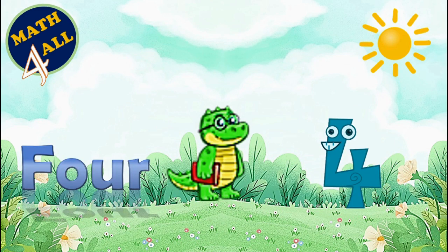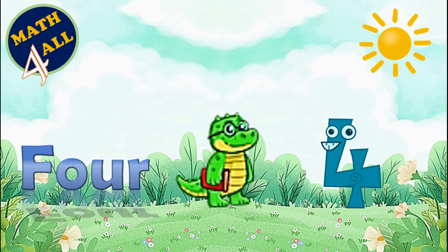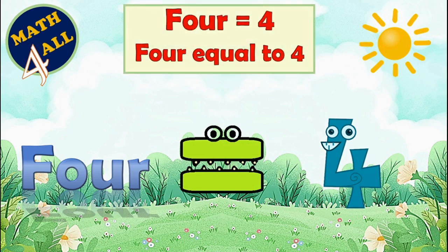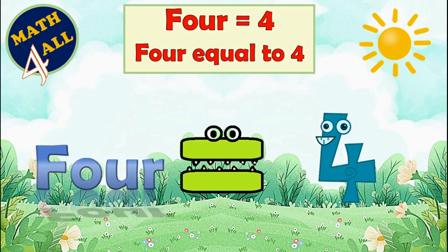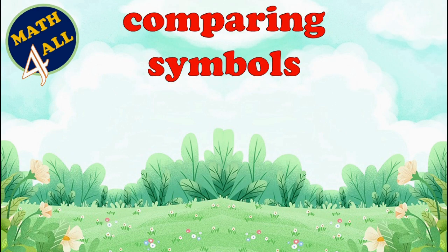Again we have two new numbers. If we are going to read them, we have 4 and 4. Something confused Number Gator — now we have two numbers that are the same. So he just makes his mouth look like an equal sign, because 4 is equal to 4. So Number Gator will eat both of them.